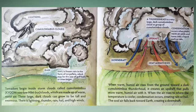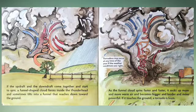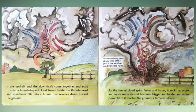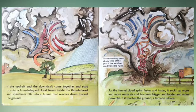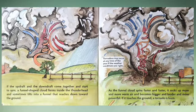The cool air falls back toward earth, creating a downdraft. If the updraft and the downdraft come together and start to spin, a funnel-shaped cloud forms inside the thunderhead and sometimes tilts into a funnel that reaches down toward the ground. As the funnel cloud spins faster and faster, it sucks up more and more warm air and becomes bigger, louder, and more powerful. If it touches the ground, a tornado is born.